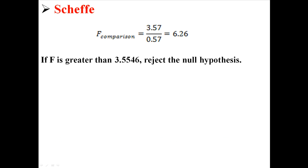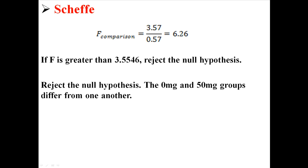Now you're going to use the same critical value that you did in your ANOVA. Our critical value was 3.5546, so our decision rule was, if our F was greater than 3.5546, we can reject the null hypothesis. And because our F was 6.26, we can reject the null hypothesis and say that the 0 and 50 mg groups are different from one another. That's one of the tests, comparing 0 and 50.